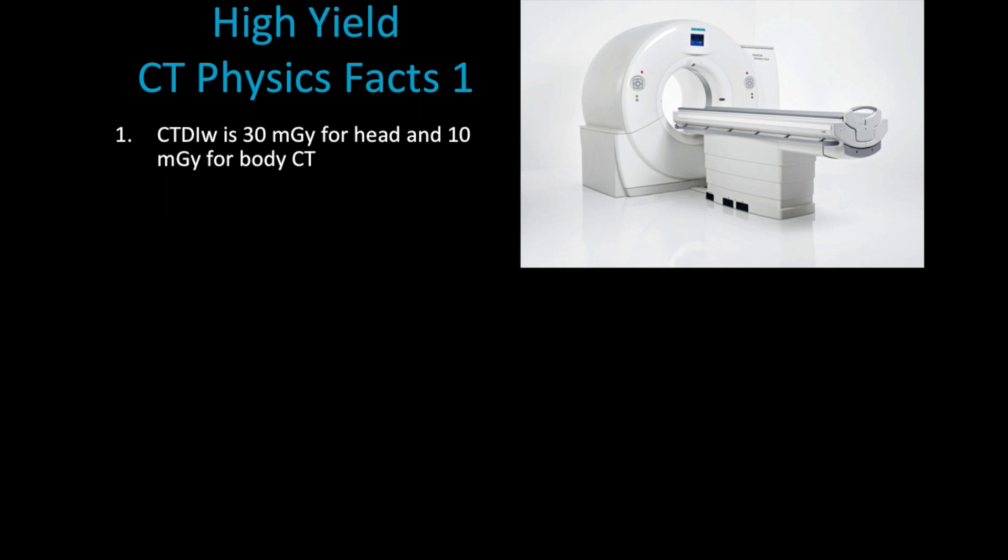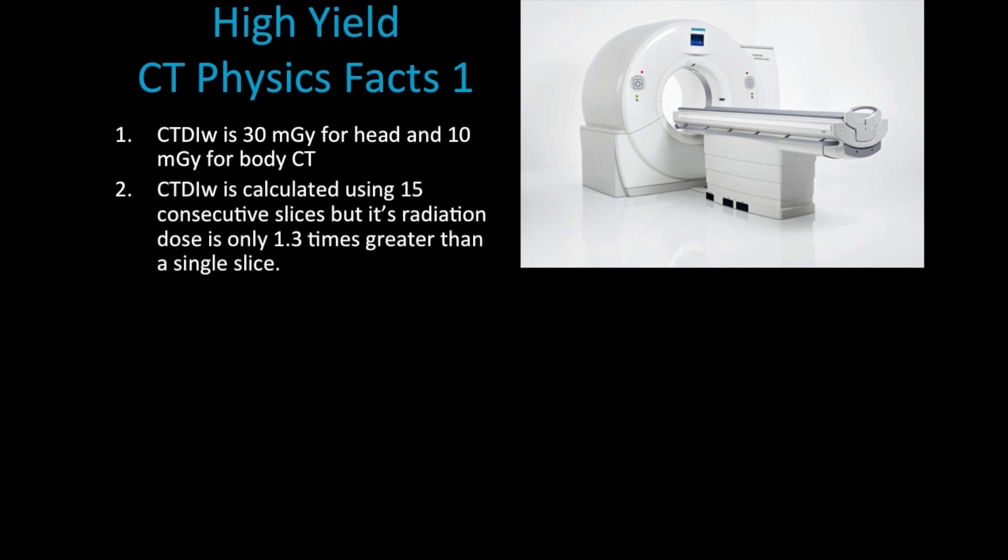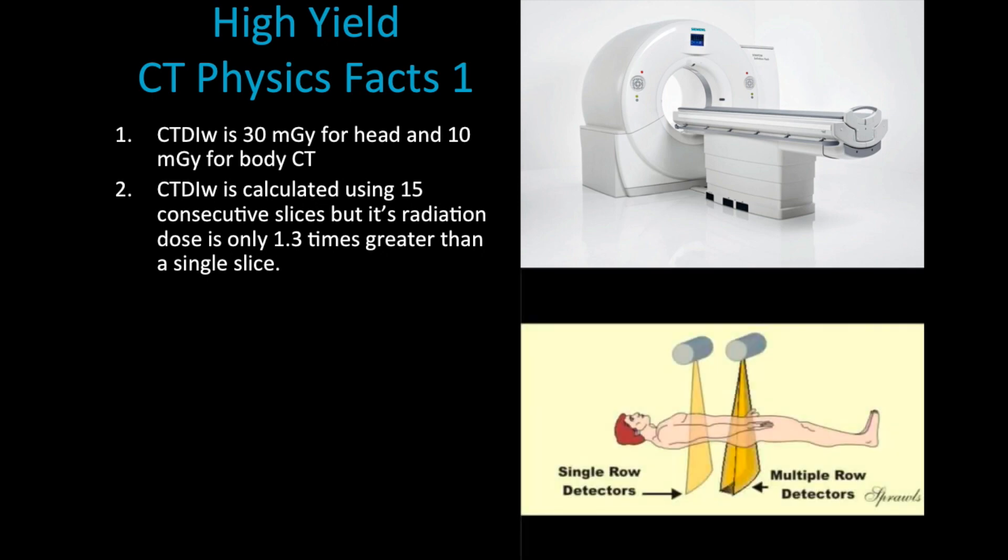The calculation for CTDI depends on 15 consecutive slices, but it also takes into account the radiation that occurs as scattered radiation at the two edges of the x-ray beam. They're also called the two tails of the x-ray beam, in which they have scattered radiation.